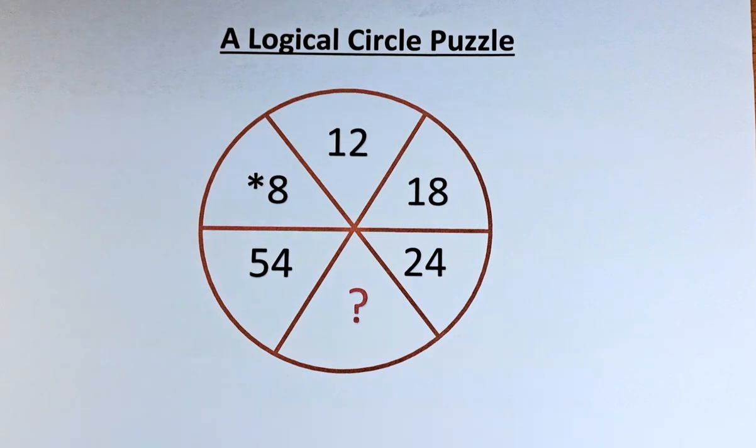Welcome back to the solution of a logical circle puzzle. The numbers in the puzzle are: it starts with 8, followed by 12, 18, 24, a question mark, and 54. So what number represents the question mark?